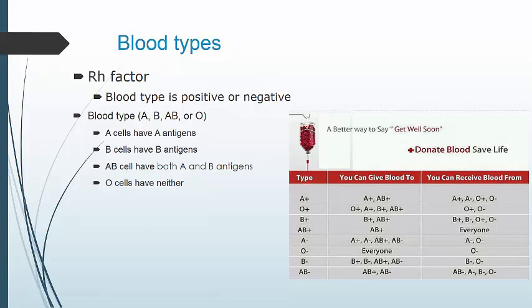Type A blood can receive from type A — it recognizes it as self — but if it receives type B blood, it will recognize B antigens as invaders and attack. Type A can also receive from O because O has no antigens to trigger an alarm. The universal recipient is AB because they have both antigens and can accept any blood type. The universal donor is O negative. The Rh factor adds another layer — Rh negative individuals can donate to whoever matches their ABO type, while positive can only donate to positive recipients.